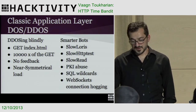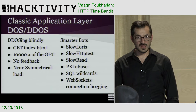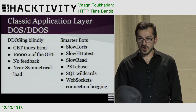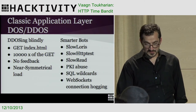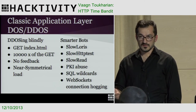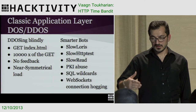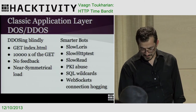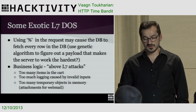Some newer, smarter attack vectors emerged four or five years ago — things like Slow Loris, Slow HTTP POST, Slow HTTP Read, PKI abuse by re-establishing the session or doing a handshake over and over, abusing the PKI on the server side, smart SQL wildcard injections that overload your database, and with advancements of WebSockets, newer vectors for denial of service.